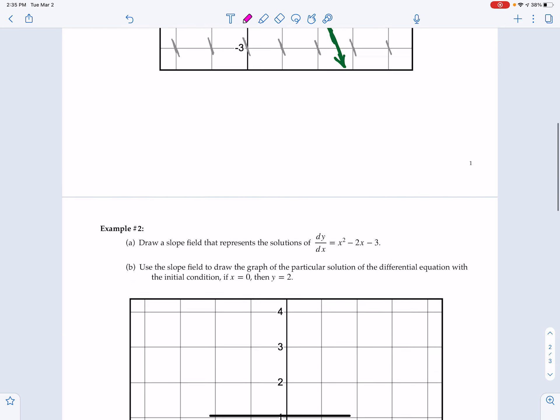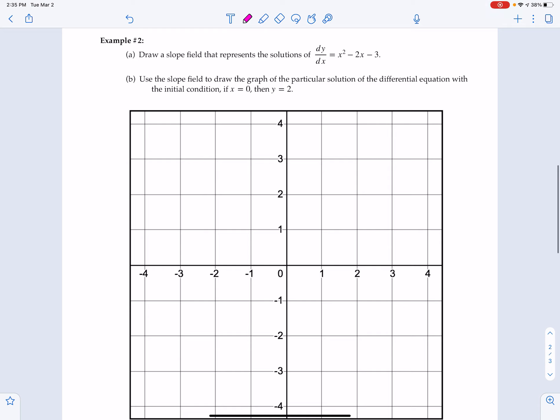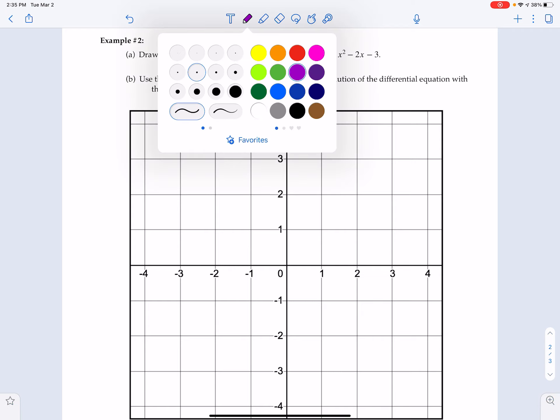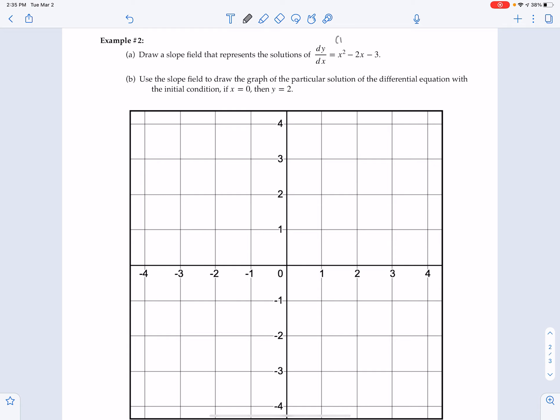Example number two. Part A says draw a slope field that represents the solutions of dy/dx = x² - 2x - 3. So in other words, if I went to an x coordinate of 1, I would plug in 1 into this differential equation. 1 squared minus 2 times 1 minus 3. That is 1 minus 2 minus 3, which is negative 4. So anywhere I have an x value of 1, I have a slope of negative 4. And I'm doing my best to kind of estimate that negative 4.